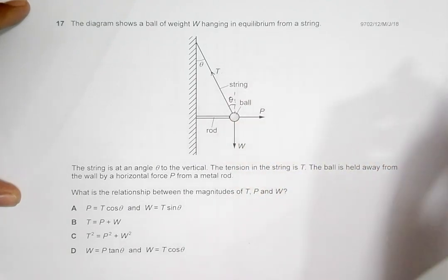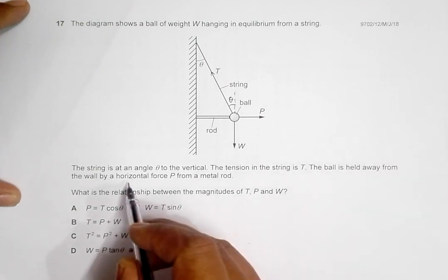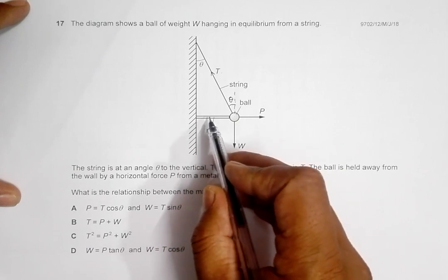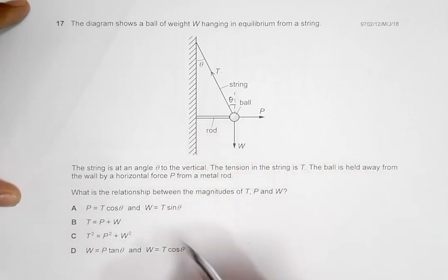The tension in the string is T, so this is the tension force. The ball is held away from the wall by a horizontal force P from a metal rod. This is a rod and it applies a certain force in this direction.